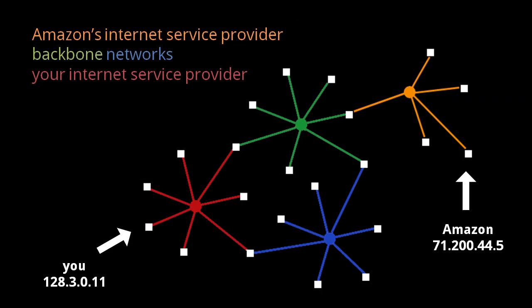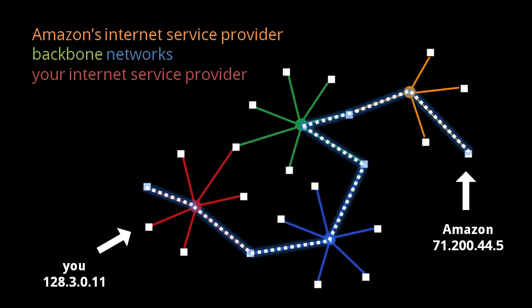Looking back at our example of a user visiting Amazon.com, let's say that the user's IP version 4 address is 128.3.0.11, and the Amazon.com server's IP version 4 address is 71.200.44.5. Packets sent between these two hosts could travel two possible routes, either directly through the green network or by taking an extra hop through the blue network as well. The question then is, how does each host and router decide where to send each packet?